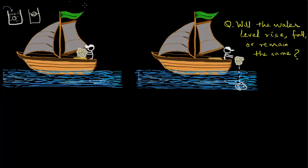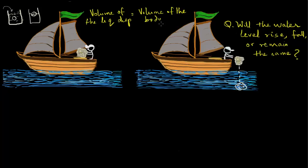We know this from buoyancy and Archimedes' principle: the volume of liquid displaced is equal to the volume of the body that is submerged under the liquid. In this case, the rock is sinking, so the volume of water displaced will be exactly equal to the volume of the rock, and accordingly the water level in the lake should go up. But hold your thought — something else is happening here at the same time.